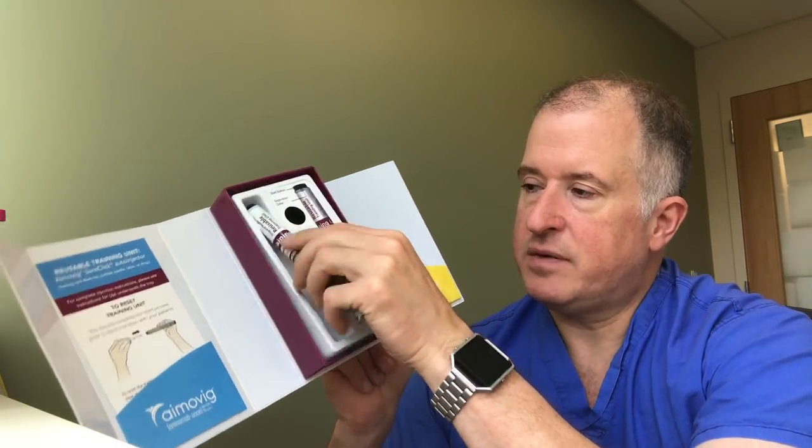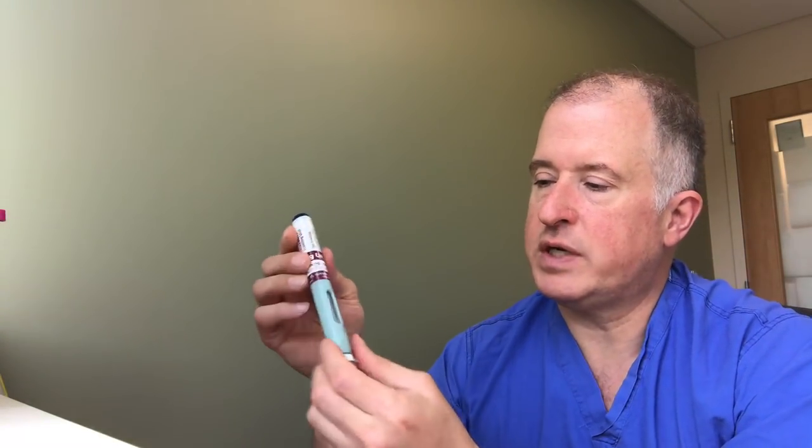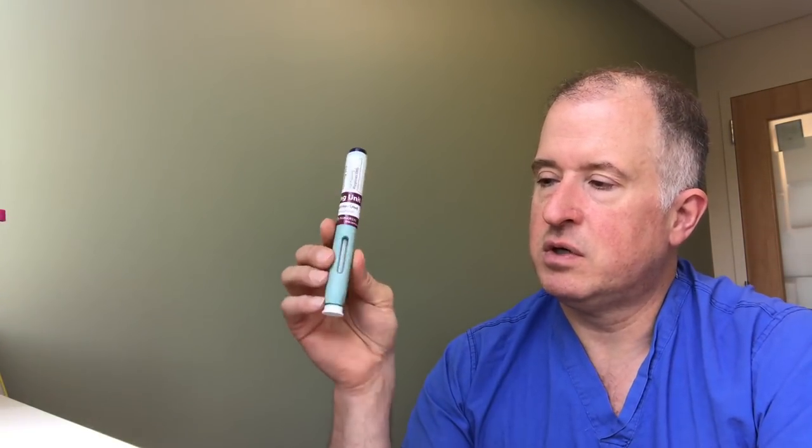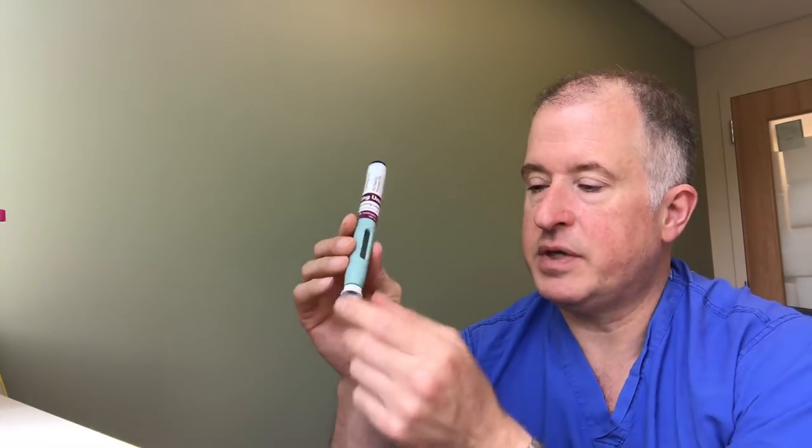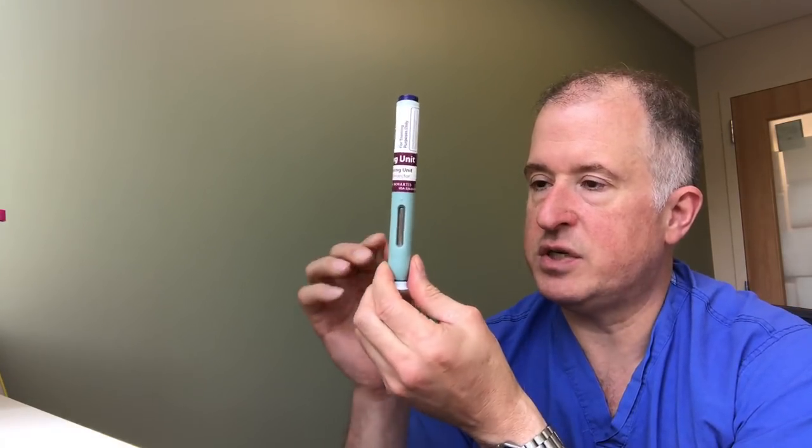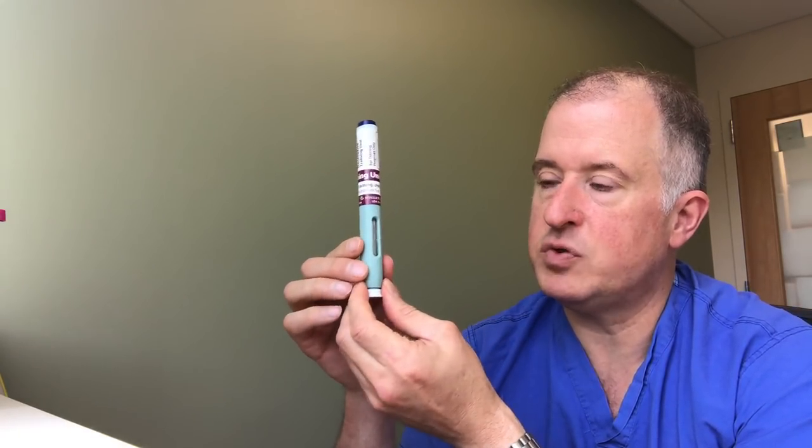So assuming that we're doing a 70 milligram injection, this is what the auto-injector will look like for 70 milligrams. And if a patient injects 140 milligrams, they'll use two of these.